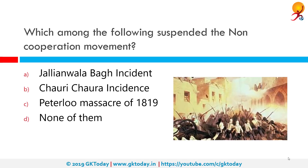Which among the following suspended the non-cooperation movement? The correct answer is the Chauri Chaura incident. The Chauri Chaura incident occurred in Chauri Chaura in the Gorakhpur district of the United Province in British India on 5th February 1922, when a large group of protesters participating in the non-cooperation movement clashed with police who opened fire.